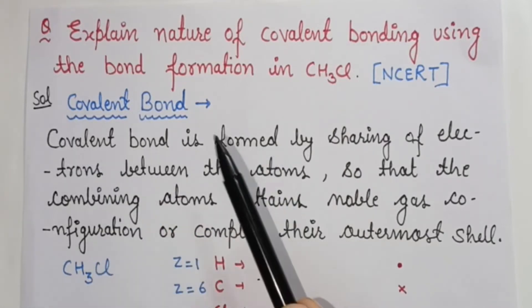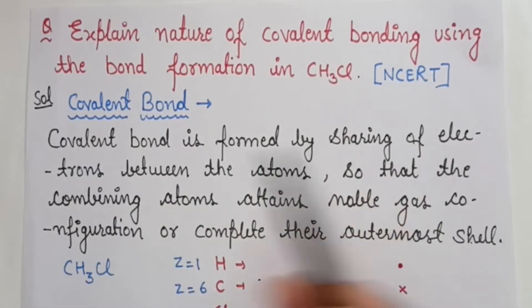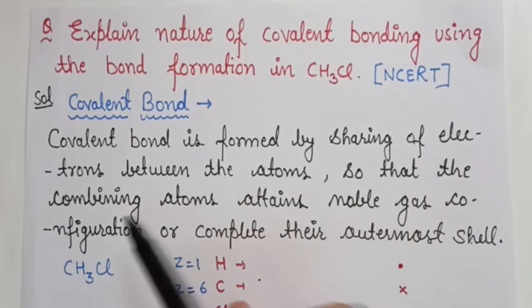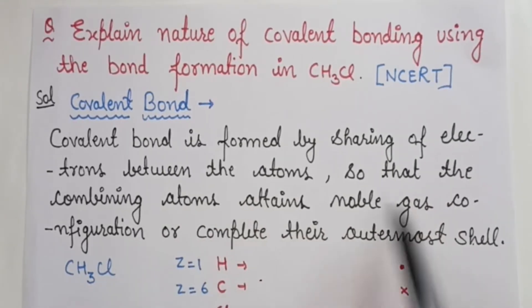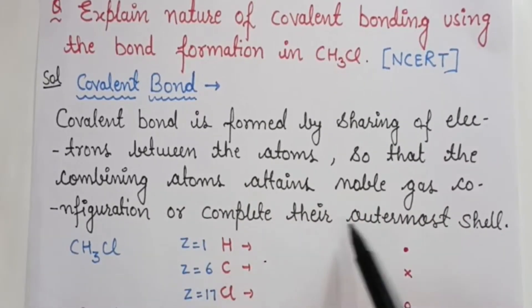First of all, let's look at the covalent bond. Covalent bond is formed by sharing of electrons between the atoms so that the combining atoms attain noble gas configuration and complete their outermost shell.